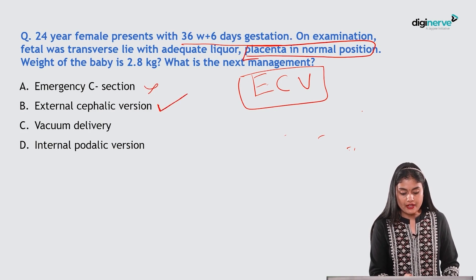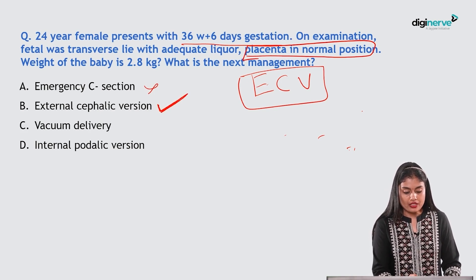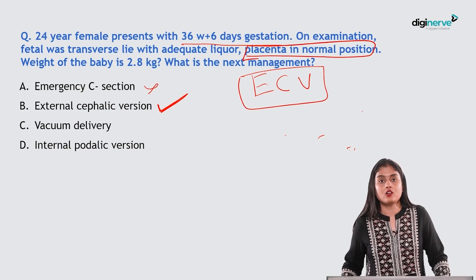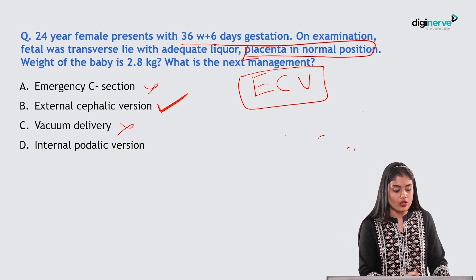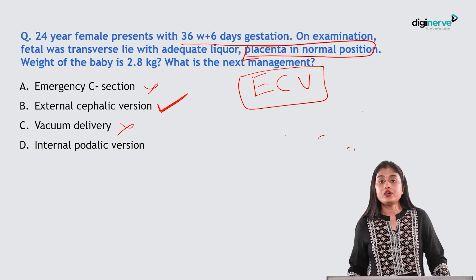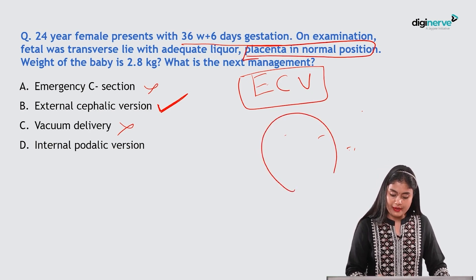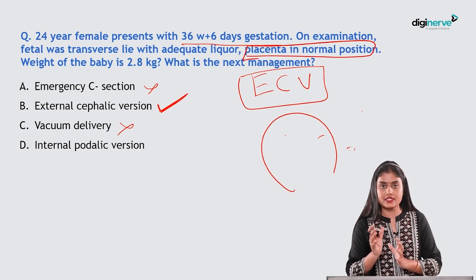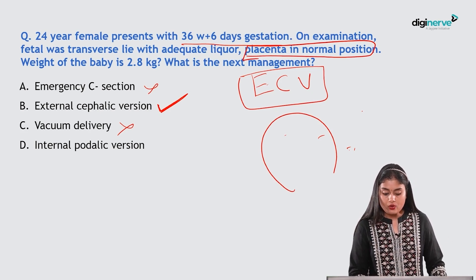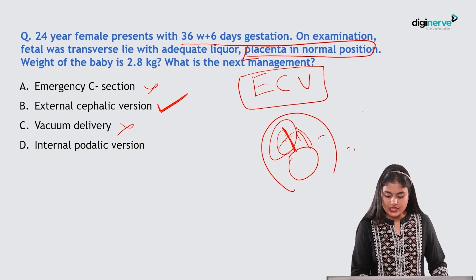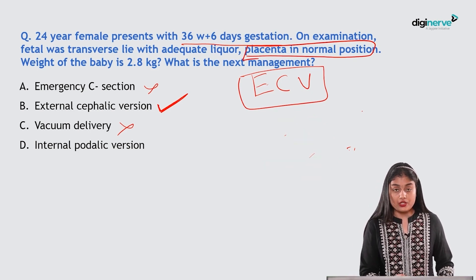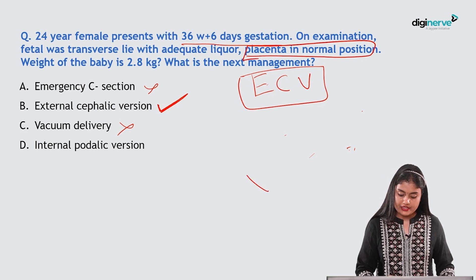Emergency cesarean section is not indicated here. Vacuum delivery cannot be used for a non-cephalic or shoulder presentation. Internal podalic version differs from ECV — in IPV, with a fully dilated cervix, the operator's hand is placed inside the uterine cavity to pull down the fetal feet, delivering by breech mechanism.